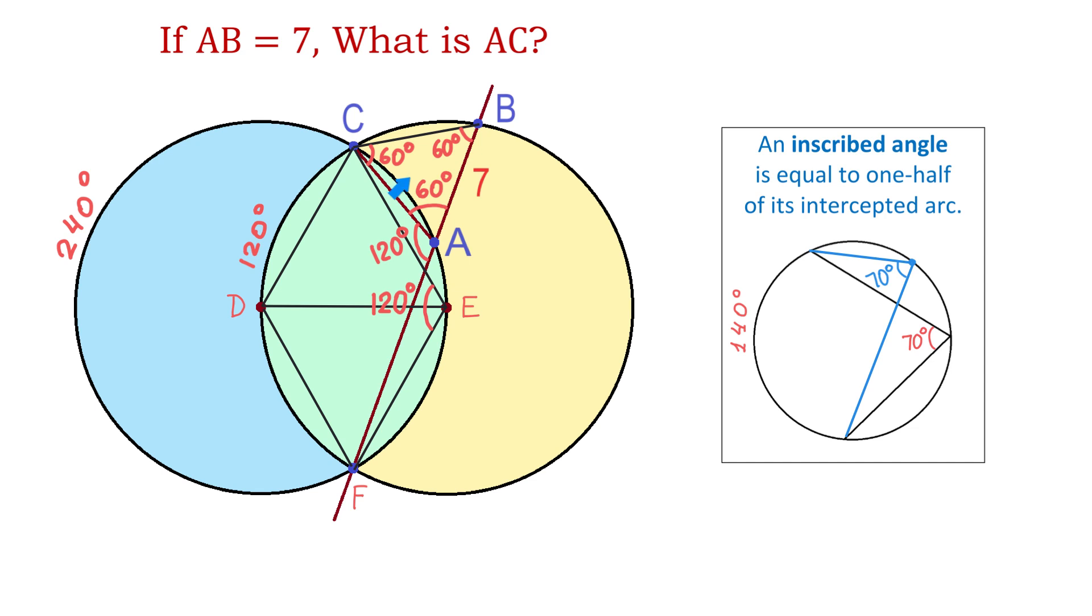So, this triangle is an equilateral triangle, and if AB is 7 units, then AC is also 7 units. So, we will write that AC equals 7.